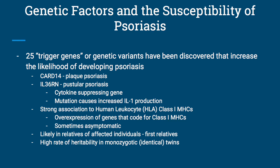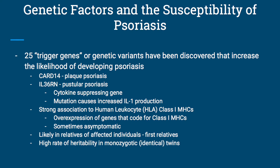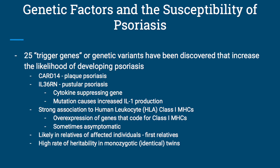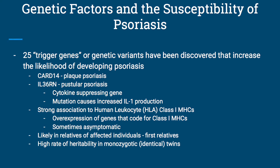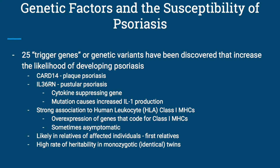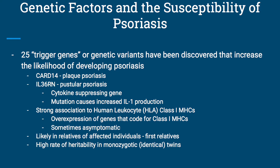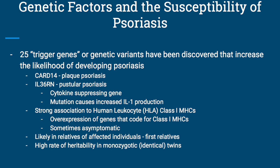For the patient, genetics and their environment play a role in psoriasis. Genetic factors tend to increase a person's susceptibility. Scientists have discovered 25 trigger genes or genetic variants that can increase the likelihood of developing psoriasis. A couple of these are CARD-14, which is associated with plaque psoriasis, and IL-36RN, which tends to be associated with three types of pustular psoriasis.